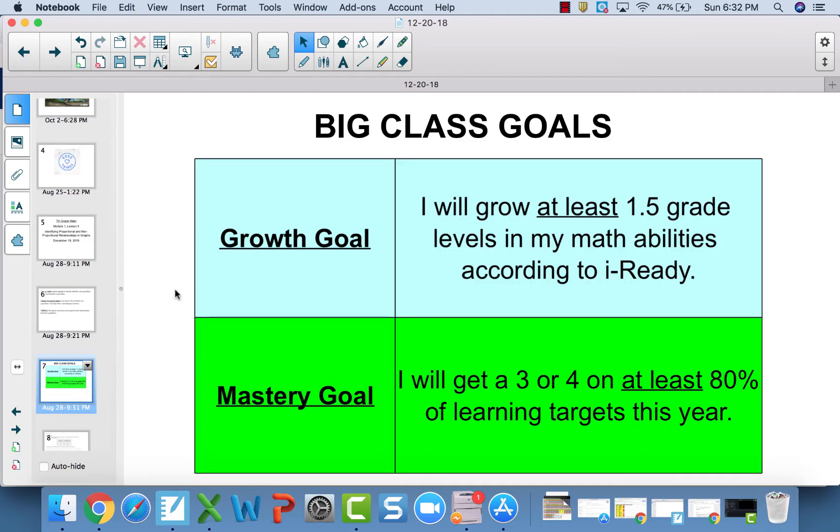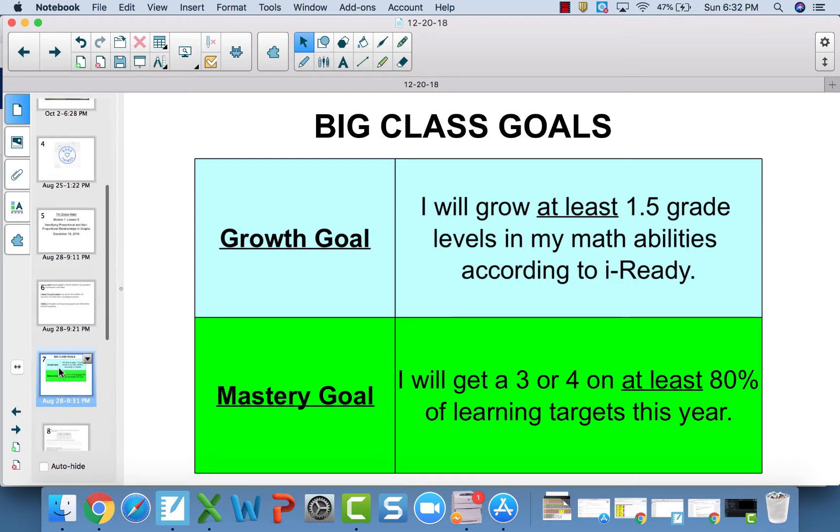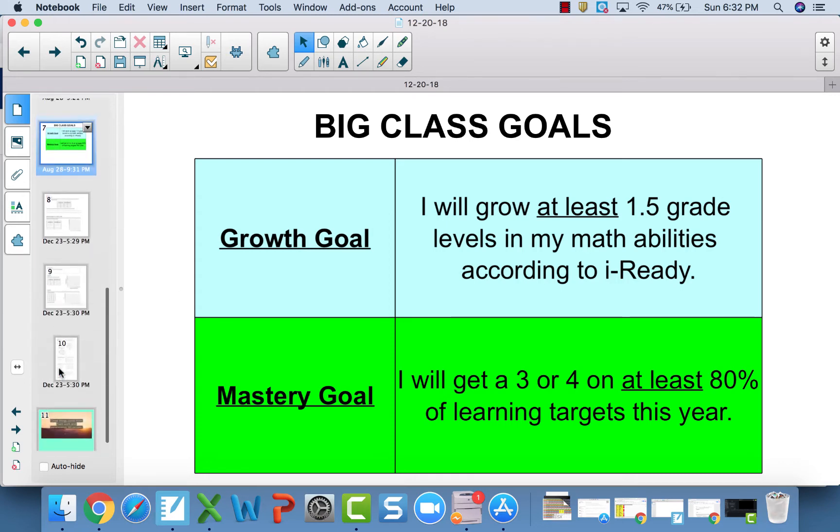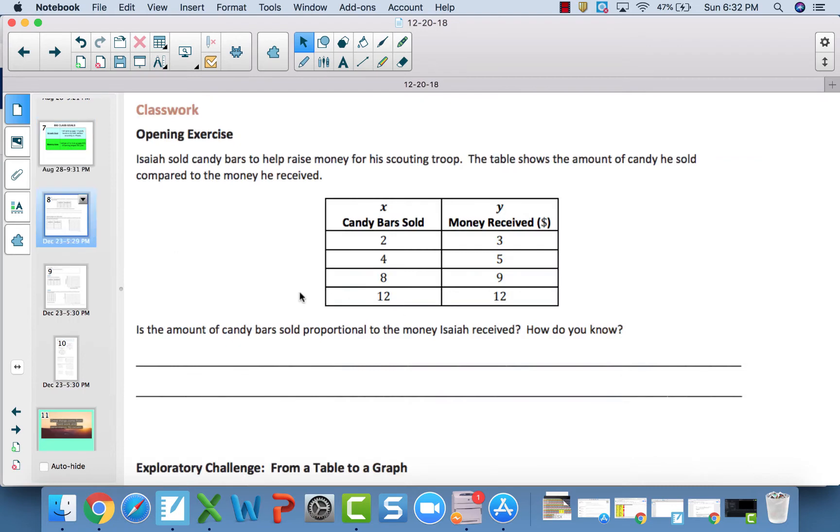Class goals are the same: a year and a half according to iReady and 80% mastery. Keep up with that sticker chart; you need 8 out of every 10.